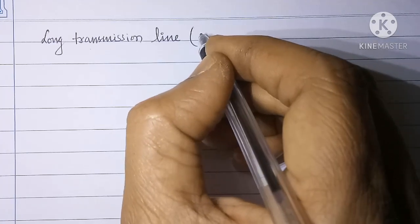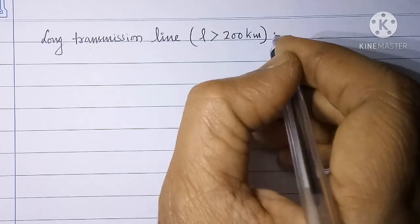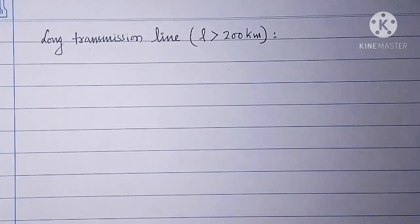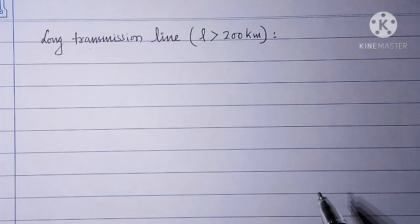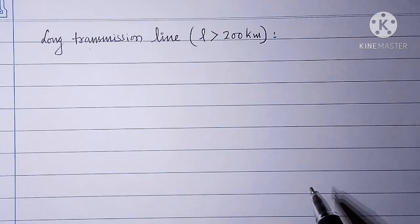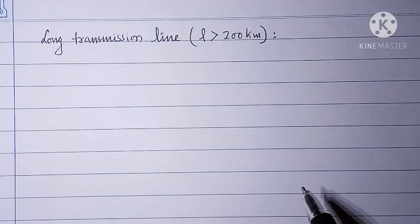Long transmission lines are those lines which have length more than 200 kilometers. For transmission lines having length less than 200 kilometers, we considered the transmission parameters namely resistance, reactance, and admittance as lumped ones. But for lines more than 200 kilometers, distributed parameters are considered for accuracy of analysis, where voltage and current vary at each point in the transmission line.